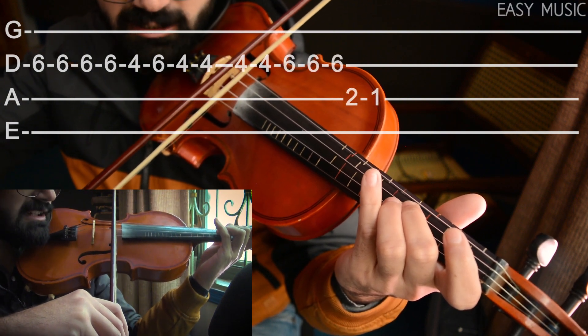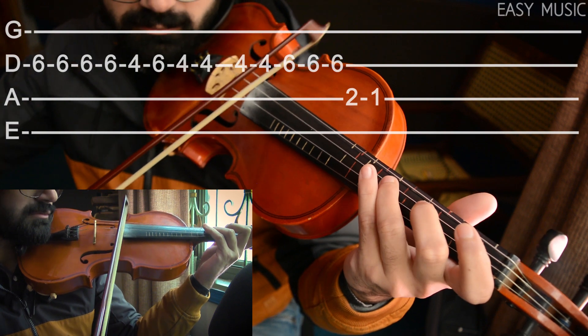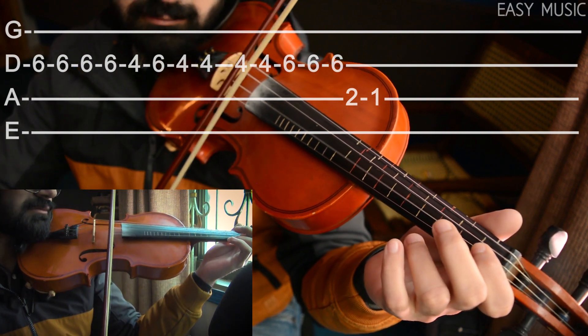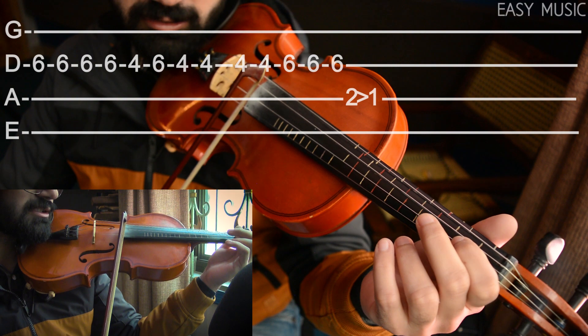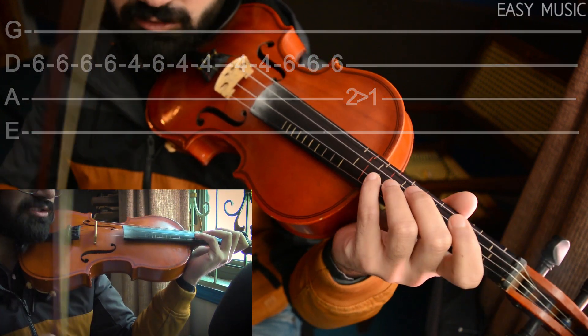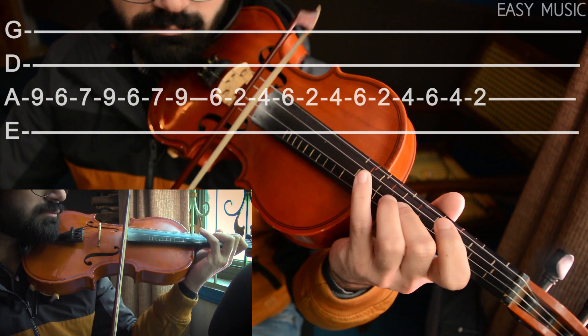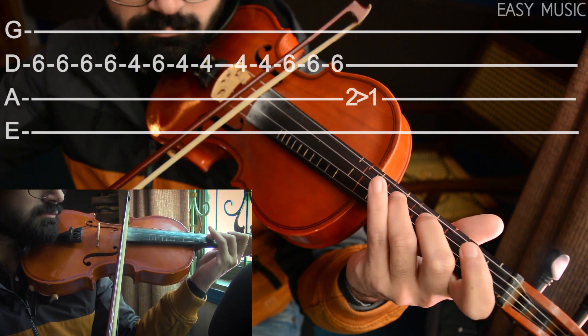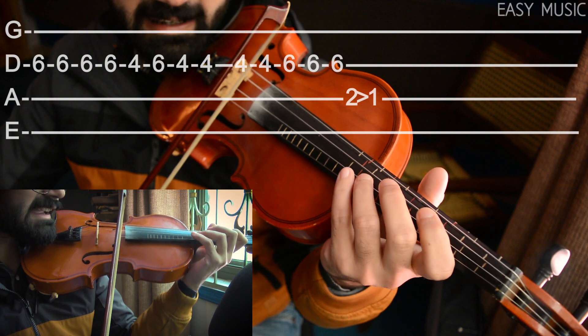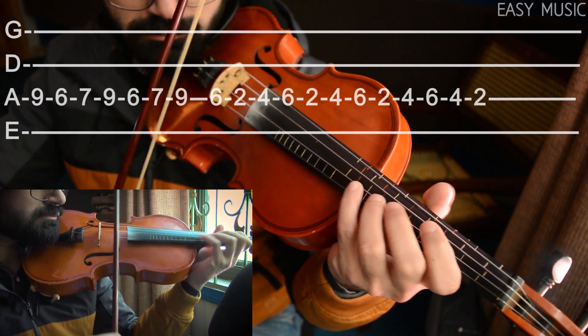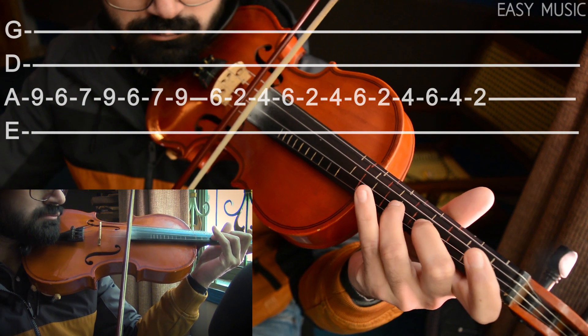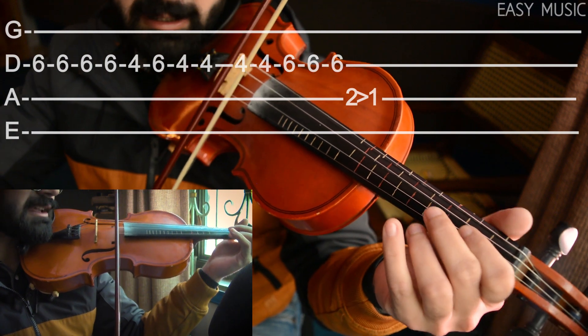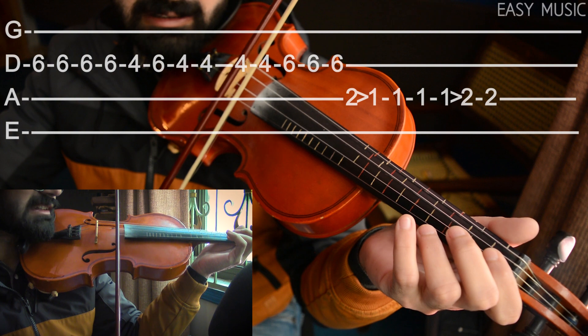And then comes again 4th fret on D, 2 times 6th fret and then 2nd fret on A, 1st fret. You have to slide from 2nd to 1st. So the first part whole will be... Again the same thing. And then from here, 1st fret, back to 2nd fret.